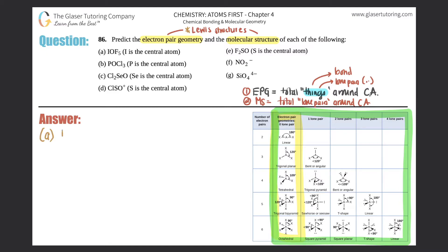Part a: IOF5. Iodine is the central atom, so iodine goes in the middle surrounded by five fluorines — one, two, three, four, five. Each fluorine has three lone pairs around it to satisfy the octet rule.